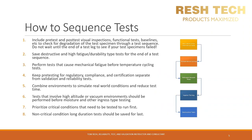So how do we sequence tests? Number one: include pre-test and post-test visual inspections, functional tests, baselines, and other checkpoints to check for degradation of the test specimen through a test sequence — do not wait until the end of a test leg to see if your test units failed. Number two: save destructive and high fatigue durability type tests for the end of a test sequence. Number three: perform tests that cause mechanical fatigue before temperature cycling tests. Number four: keep pre-testing for regulatory, compliance, and certification testing separate from validation and reliability tests.